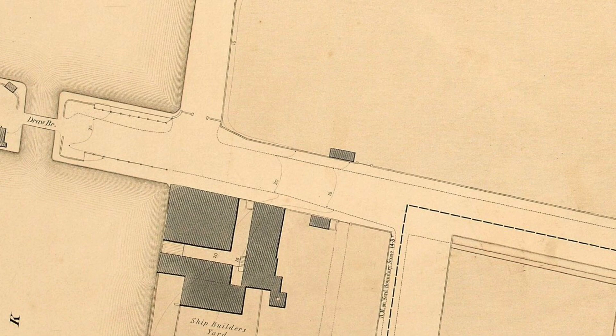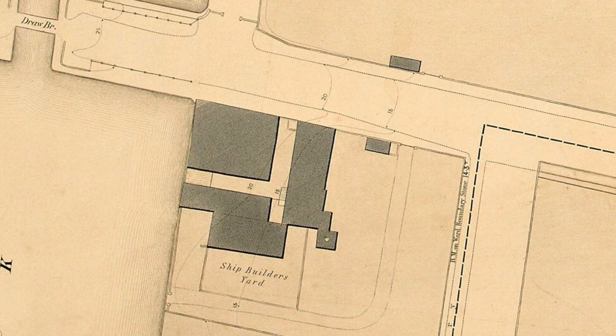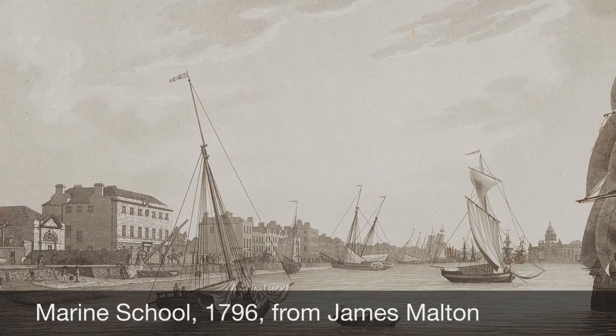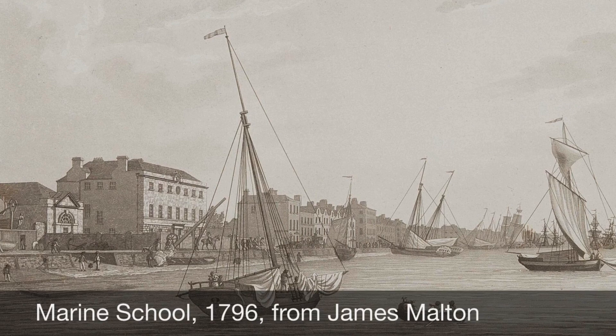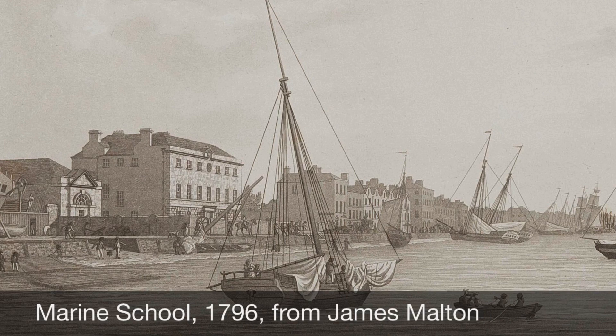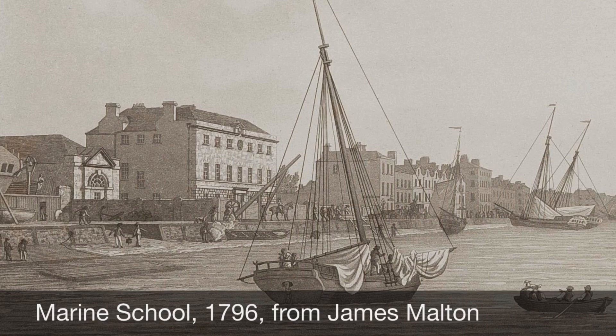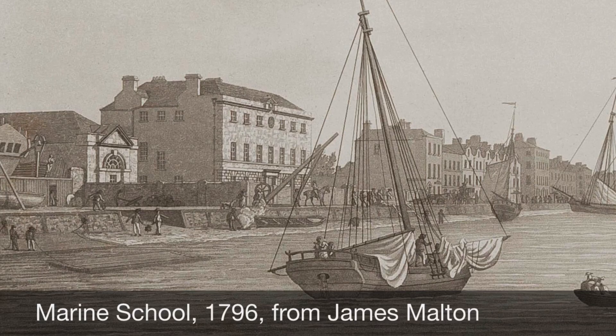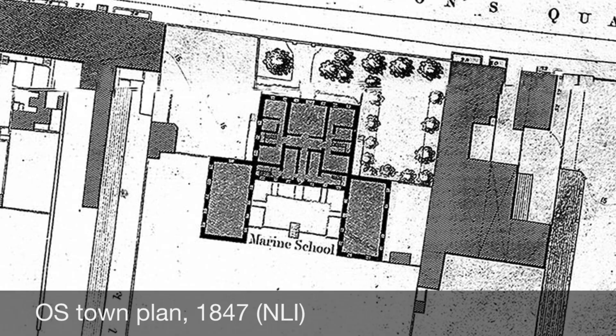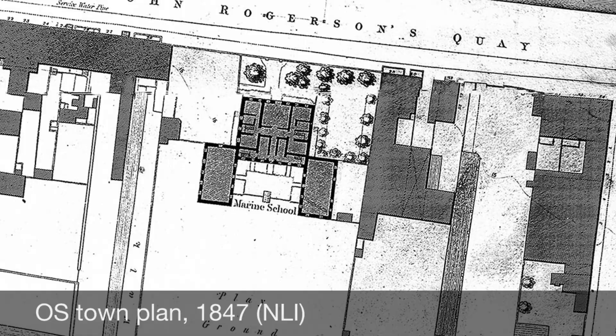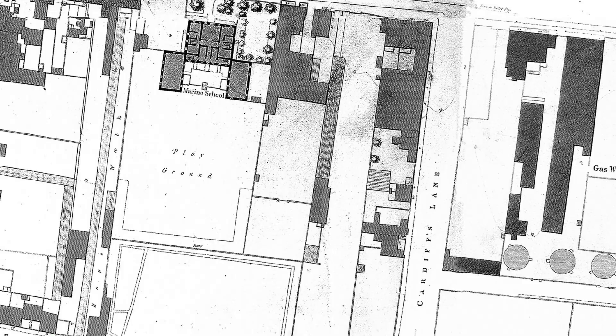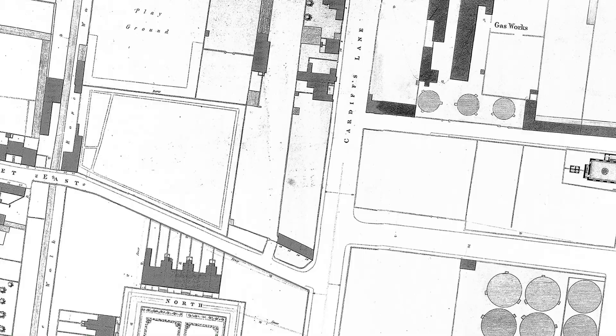Most of the shipping facilities, as we've seen, were located on the north bank of the Liffey along the North Wall and Custom House Quay. On the south side of the river along Sir John Rogerson's Quay, other interesting facets of this maritime community are depicted on the map. Facing the river between Lime Street and Cardiff's Lane, we see the Hibernian Marine School, established by Parliamentary Grant in 1775 to provide maintenance, education and apprenticeships for the children of seamen. The building depicted on the map survived intact until 1979, when it was demolished to make way for offices.